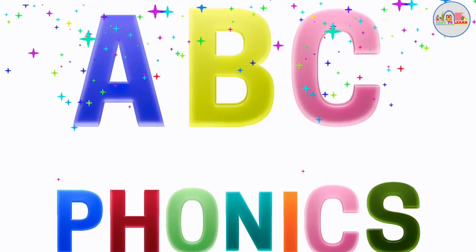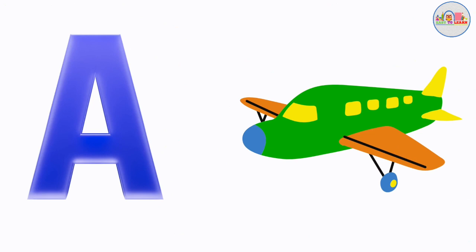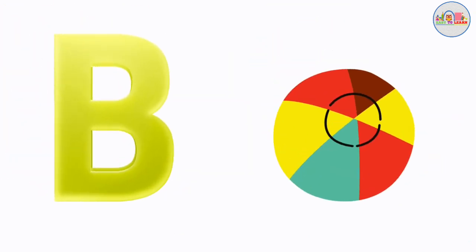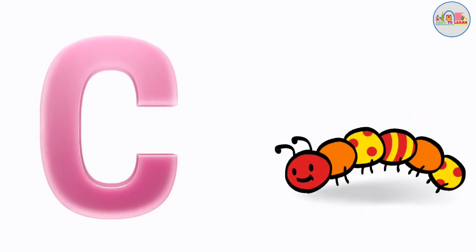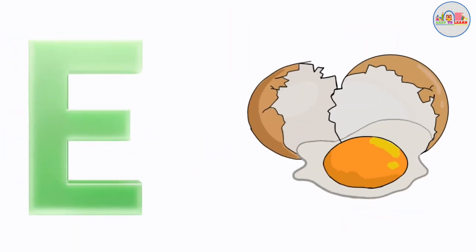Let's learn ABC phonics. I am letter A. Aeroplane. I am letter B. Ball. I am letter C. Caterpillar. I am letter D. Doll. I am letter E. Egg.